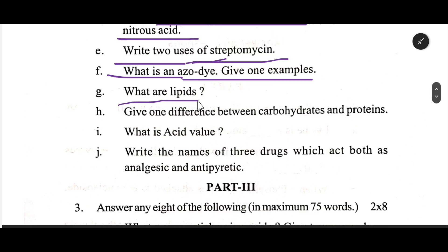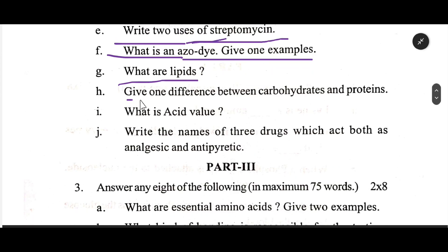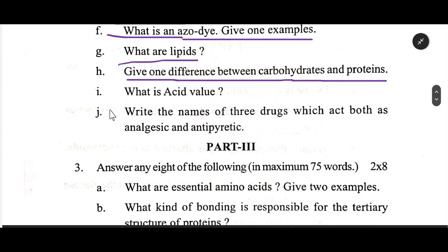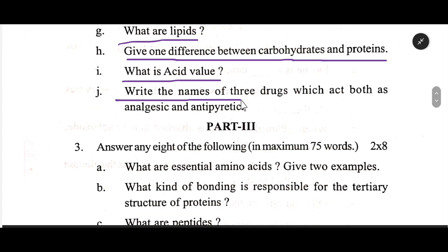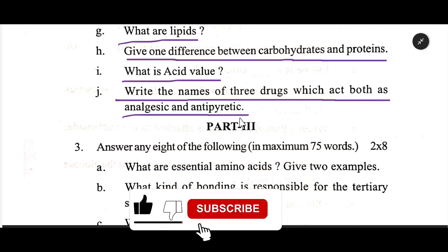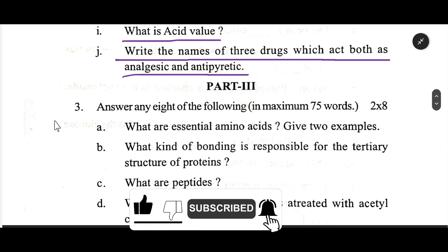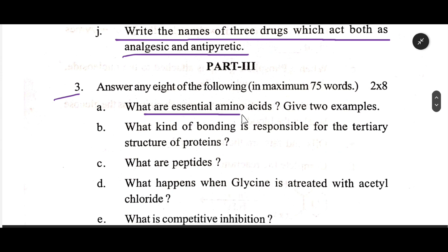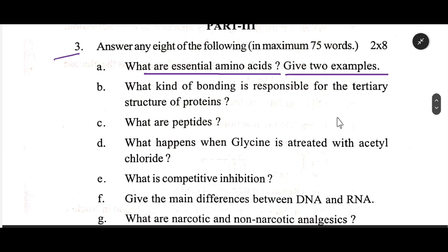What are lipids? Give one difference between carbohydrates and proteins. What is acid value? Write the name of three drugs which act both as analgesic and antipyretic. Number three: what are essential amino acids? Give two examples. What kind of bonding is responsible for the tertiary structure of proteins?